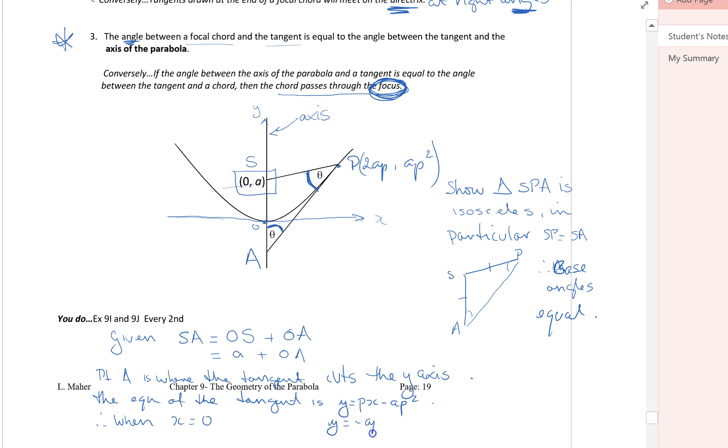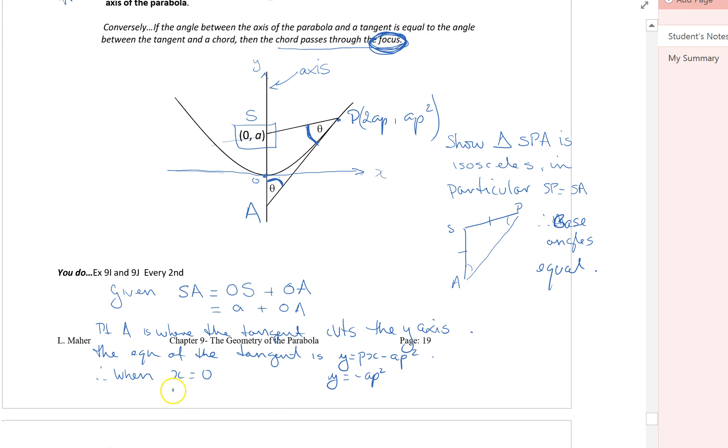y is minus AP squared. So therefore, we can say O to A would be AP squared. We're finding the distance. Therefore, what do we know about S to A? S to A is A plus AP squared.